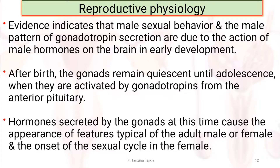Evidence indicates that male sexual behavior and male patterns of gonadotropin secretion are due to the actions of male hormones on the brain during early development. After birth, the gonads remain quiescent until adolescence, when they are activated by gonadotropins from the anterior pituitary gland. Hormones secreted by the gonads at this time cause the appearance of features typical of adult male or female, and the onset of the sexual cycle in the case of female.